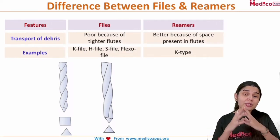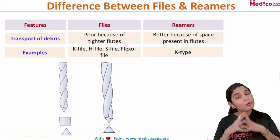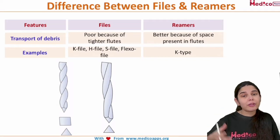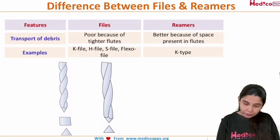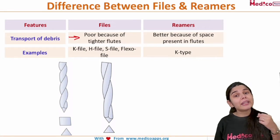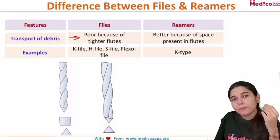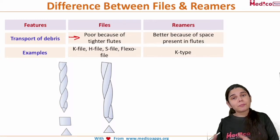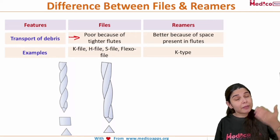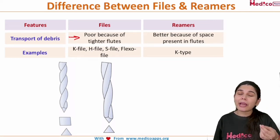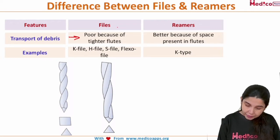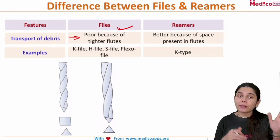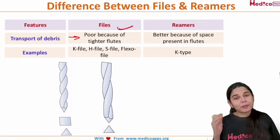Now the last two major differences. First is the transport of debris — how debris is removed from the root canal. For files, it will be poorer, because they have tighter fluids and the chip space can remove less debridement. For reamers, because they have more space in the fluids, more debridement can be removed. So the transport of debris is poor in files and better in reamers.